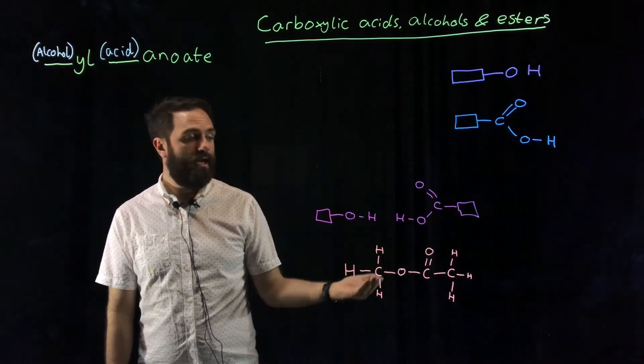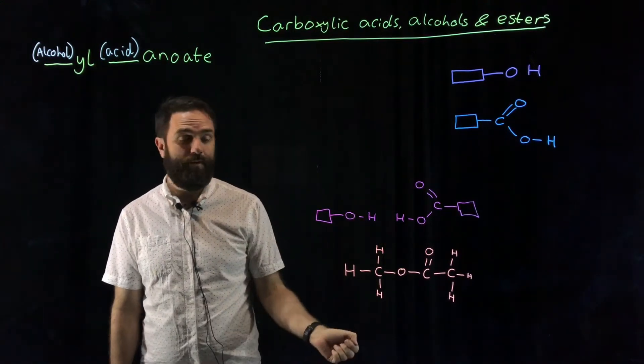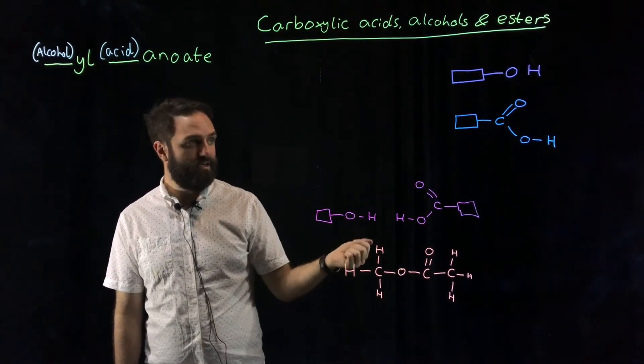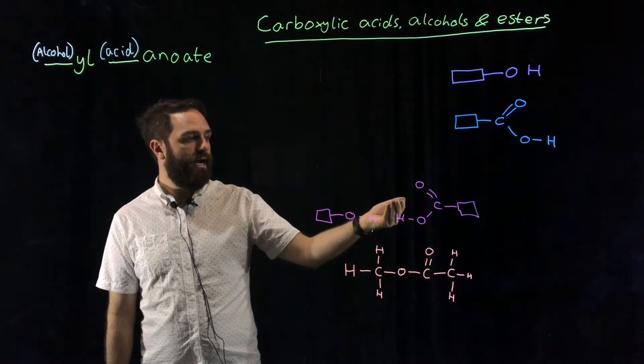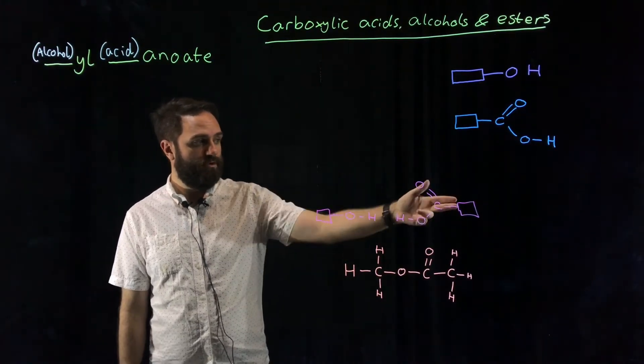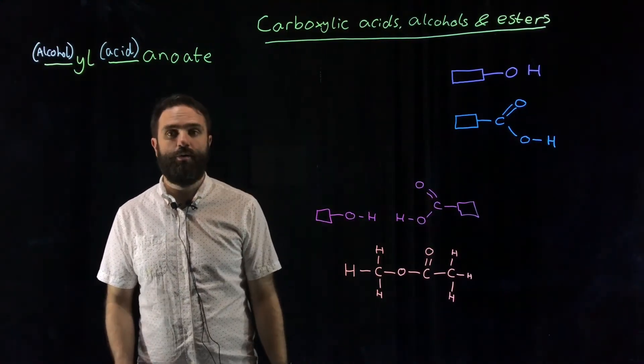Now they can form very specific kinds of bonds. So I have here for example an alcohol and a carboxylic acid. These boxes just represent an unknown carbon chain.